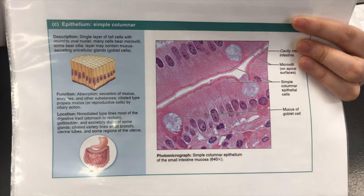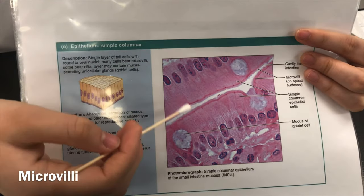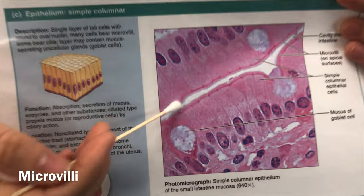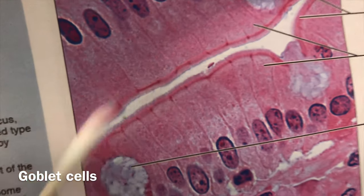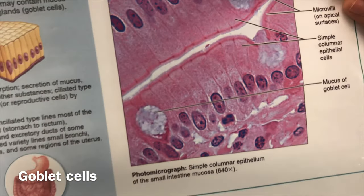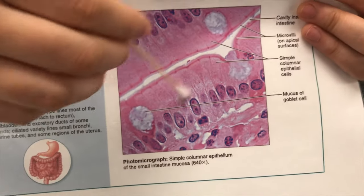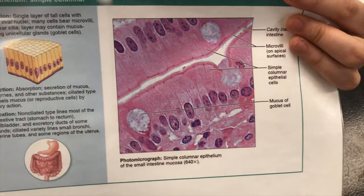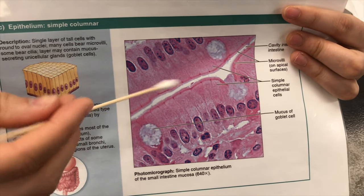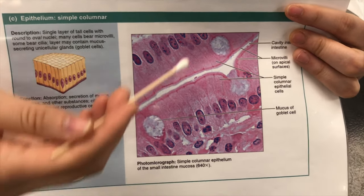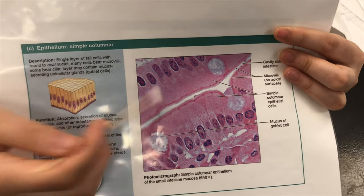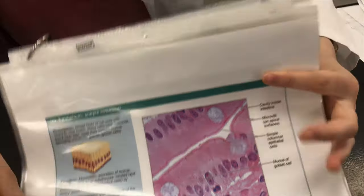Simple columnar also has cilia or microvilli lining the cell right here, and goblet cells as well. You can find simple columnar epithelium all along your digestive tract. The microvilli increase surface area, allowing more room for absorption of nutrients along that tract.